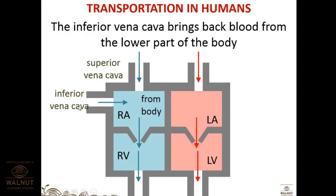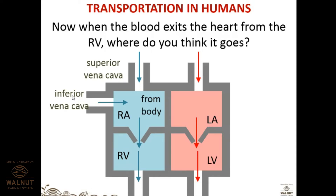Inferior vena cava brings deoxygenated blood from the lower part of the body — legs, thighs, etc. — to the right atrium. Superior refers to the upper part of the body and inferior to the lower part. When blood exits the right ventricle, since it is deoxygenated, it should not go back to the body — it needs to be sent to the lungs for oxygenation.